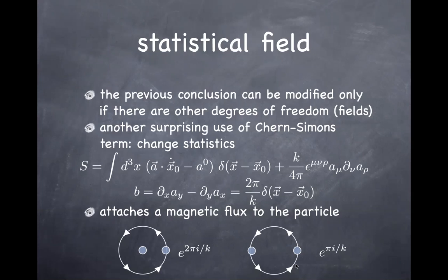If you try to interchange two particles, you don't go all the way around by 2π — you only go by angle π to interchange them. The phase you get is half of that: e^(πi/k). For k = 1, e^(πi) = −1, so you get an additional minus sign when interchanging two particles. By adding this Chern-Simons term, you can change a boson into a fermion or a fermion into a boson. That's why this field has to do with particle statistics — if you assign this Chern-Simons term coupled to an electron, you can describe the electron as a boson with the Chern-Simons term instead of a fermion with anticommutation relations.